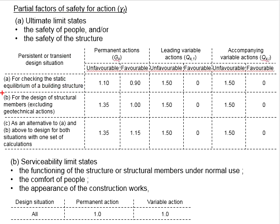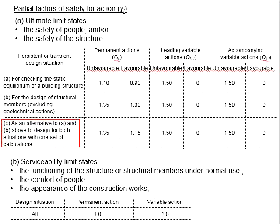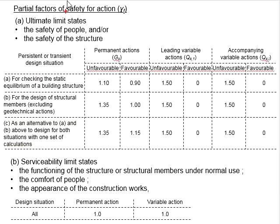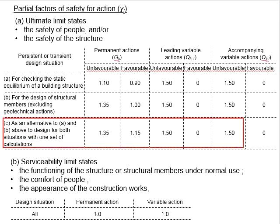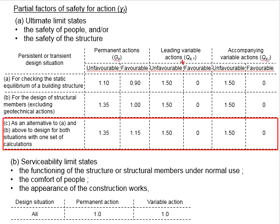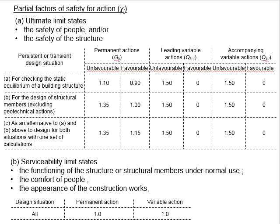The second case is for the design of structural members which do not consider geotechnical actions. The third case is an alternative to cases A and B, where you do not need to check the situations individually. If you only wish to design both situations in one set of calculations, you may use the factor of safety given here. If you are unsure which to use, you can always choose design situation C.